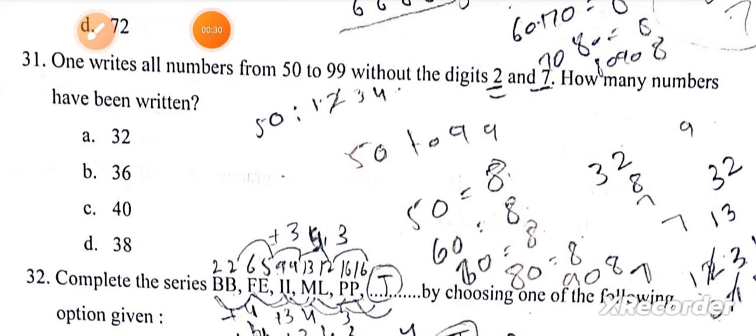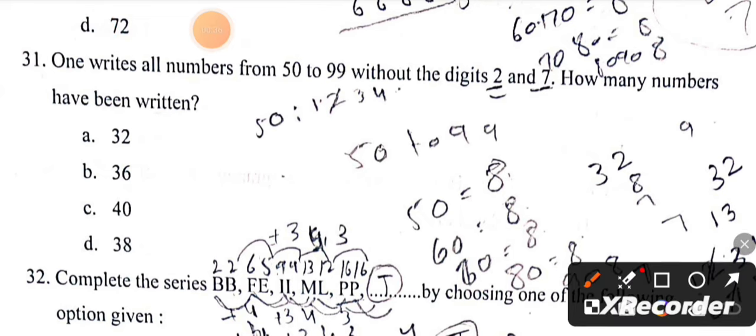Next says that one writes all numbers from 50 to 99 without the digits 2 and 7. How many numbers have been written? 32.